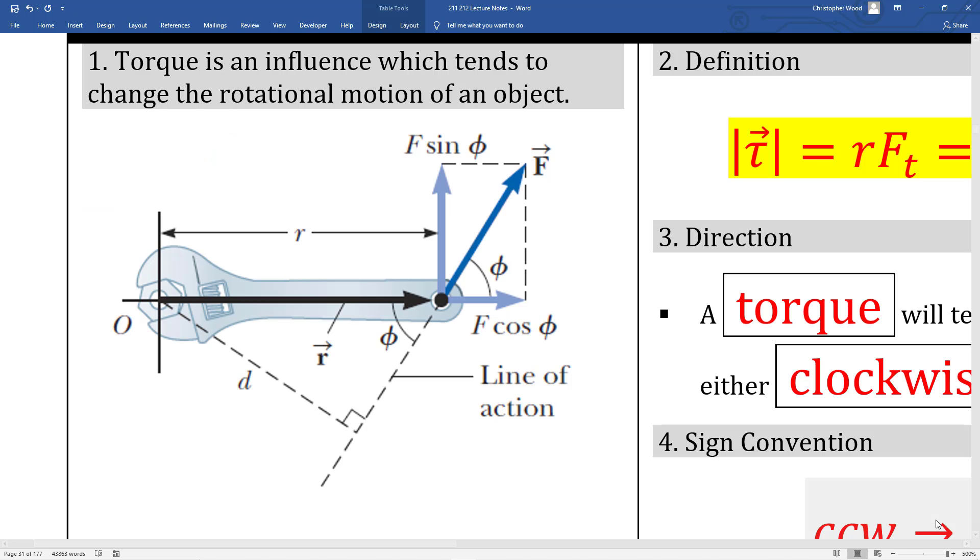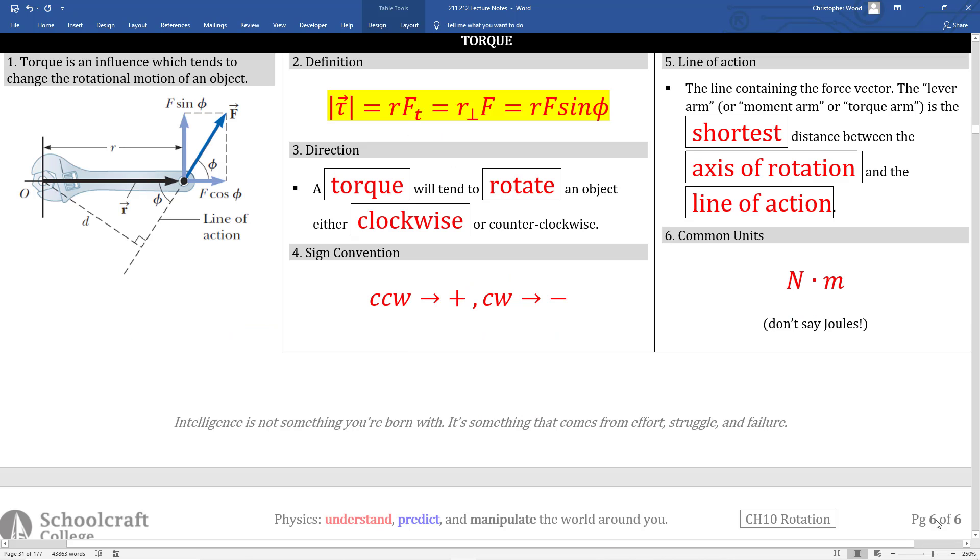Torque is an influence which tends to change the rotational motion of an object. Let's say your goal is to loosen this hex nut using this crescent wrench. You exert this dark blue force at this point indicated here. There's a lot of dimensions and angles indicated here and they all mean something. Torque is the product of perpendiculars. We remember previously that the dot product gave us the product of parallels.